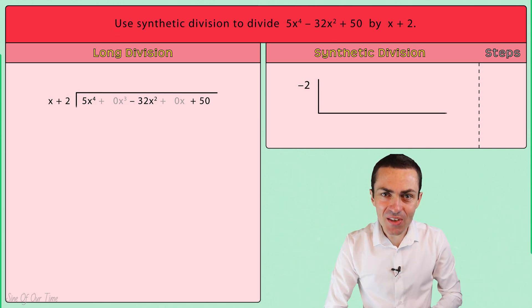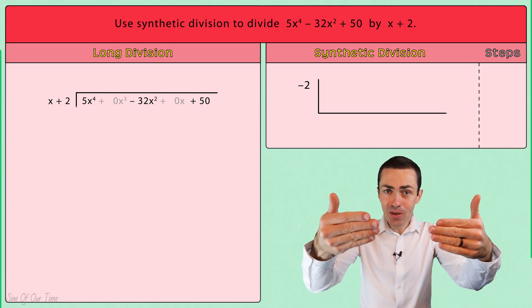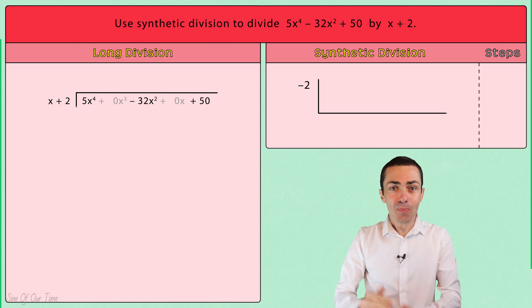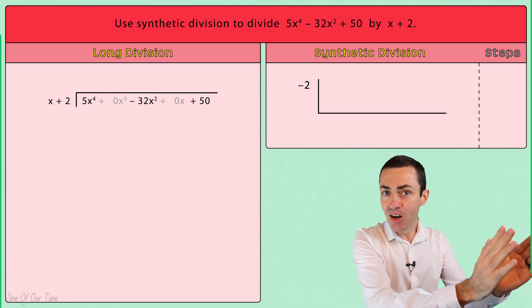Then on the inside of the synthetic division symbol at the top we write down the coefficients of each of the terms in the dividend, placing them in imaginary columns.